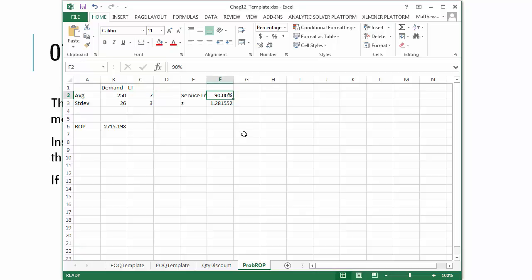Service level you can change to 95%, for example, to get the Z. And then the reorder point is going to be calculated.